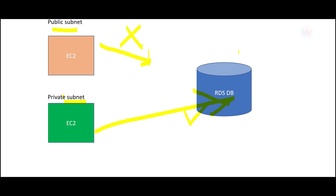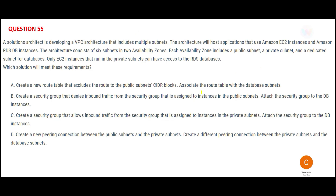As an analogy, think of it like an office: only certain people are allowed access, and others are not. The idea is that only authorized instances can reach the database, and unauthorized ones are blocked. Now let us solve this problem.